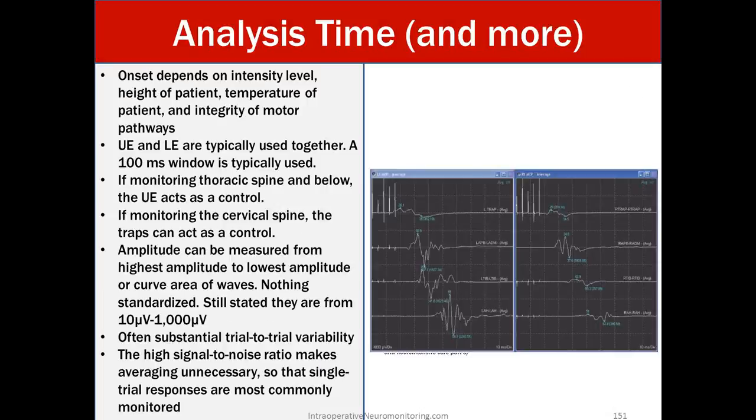Analysis time. The onset depends on intensity level, the height of the patient, temperature of the patient, and integrity of the motor pathway. Upper and lower extremities are typically used together. A 100 millisecond window or 10 milliseconds per division is typically used. If monitoring thoracic spine and below, the upper extremity acts as control. If monitoring the cervical spine, the traps can act as a control. So remember, the traps are coming from cranial nerve 11, which is rostral to the surgical area.